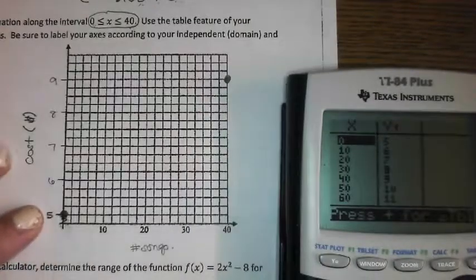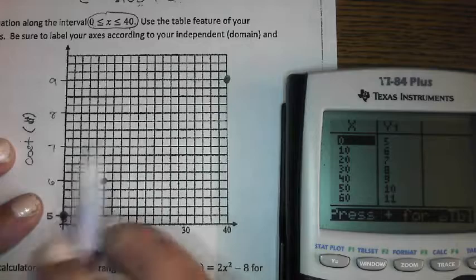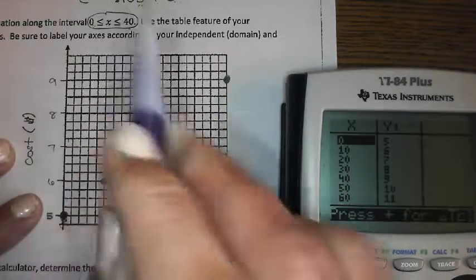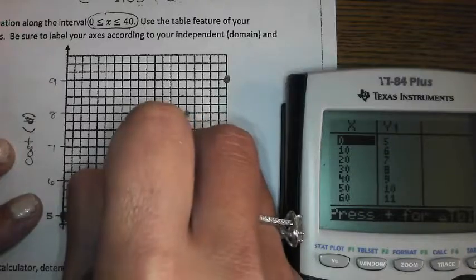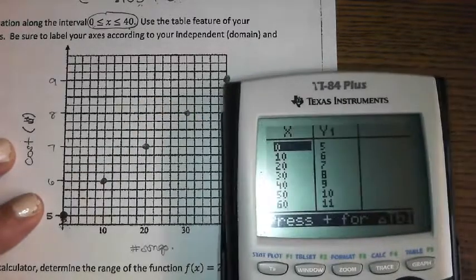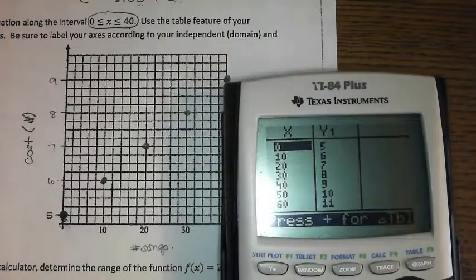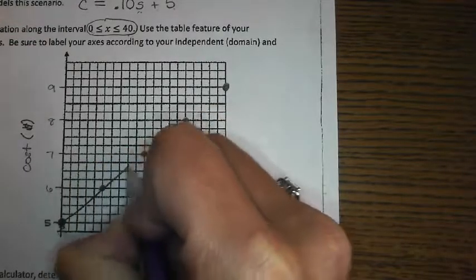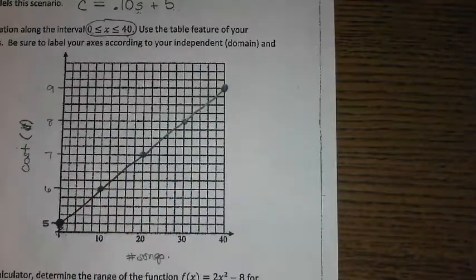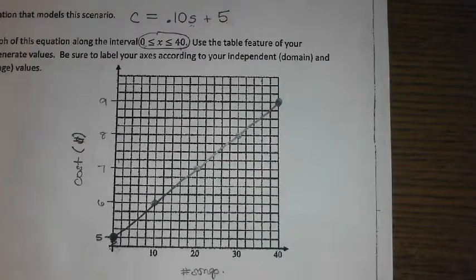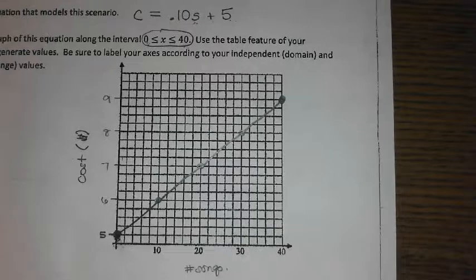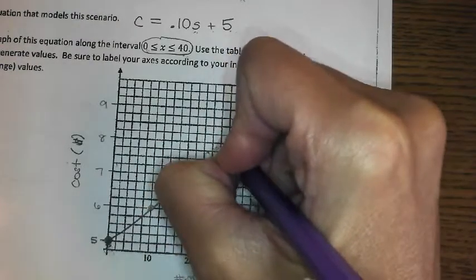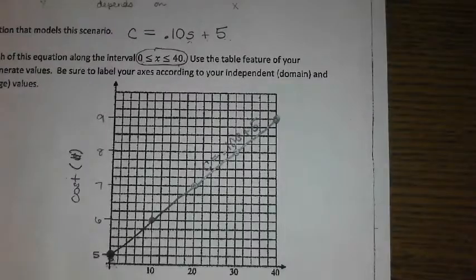So 10 songs goes with $6, 20 songs goes with $7, and 30 songs goes with $8. And I plot that without having to really sift through that chart. Now when I connect it, am I forgetting anything that you can think of? Labeling the line. Very good. So we can say C equals .10S plus 5.